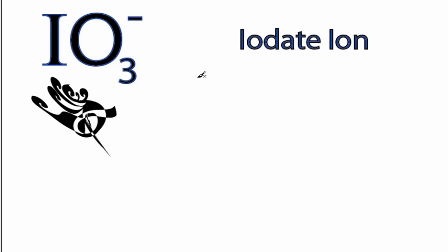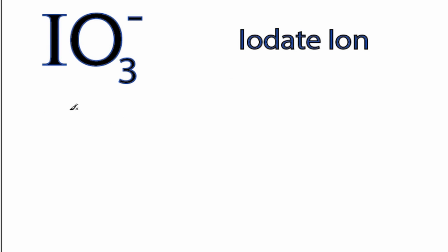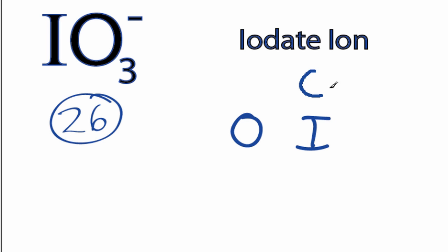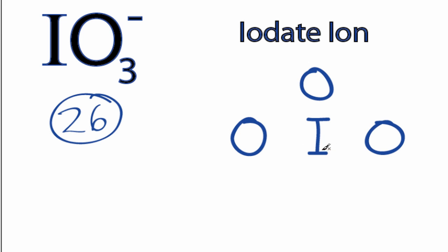This is the IO₃⁻ Lewis structure, the iodate ion. For IO₃⁻ we have a total of 26 valence electrons. Iodine is the least electronegative, so we'll put that at the center, and then we'll put the oxygens around the outside. We have 26 valence electrons for IO₃⁻; we'll put two between atoms to form chemical bonds.